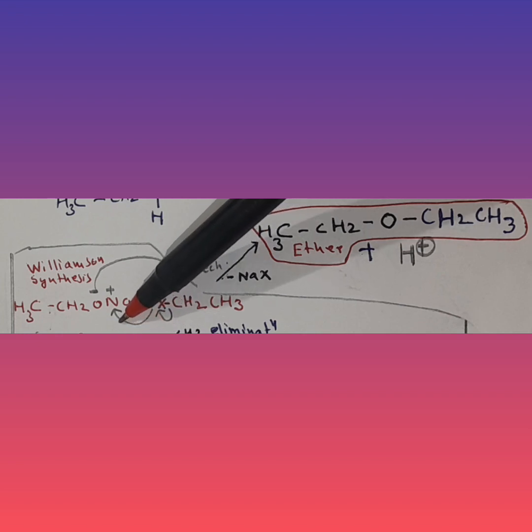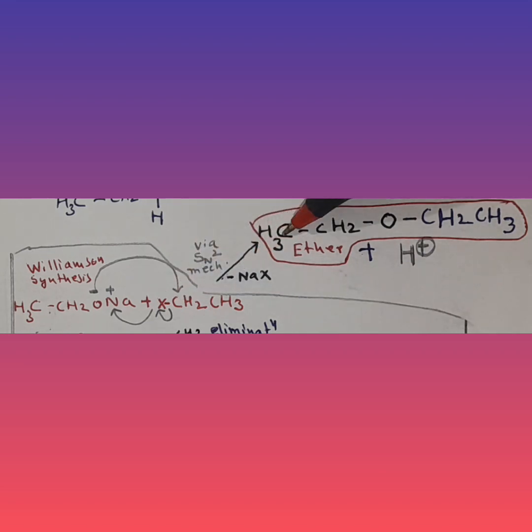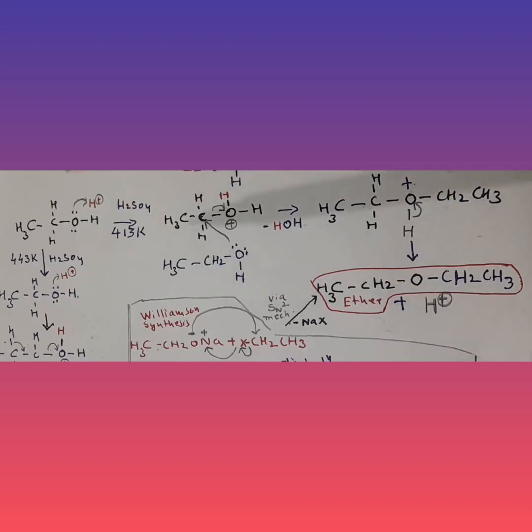The O⁻ ion does a nucleophilic attack on the CH₂ carbon — since it has lost its bond pair, that carbon becomes a carbocation. The nucleophilic attack on this carbon forms diethyl ether. This entire process occurs via an SN2 mechanism.